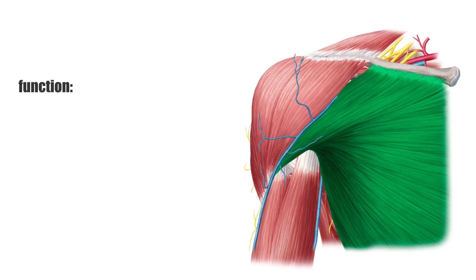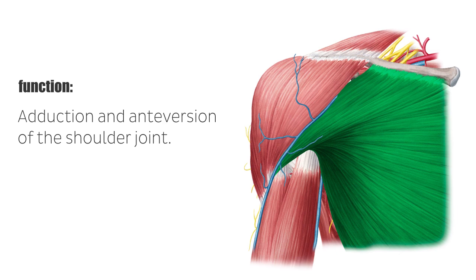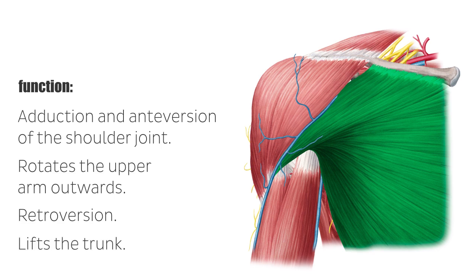The pectoralis major muscle is the most important muscle for the adduction and anteversion of the shoulder joint, which is why it is also known as the breaststroke muscle. It rotates the upper arm outwards and makes a powerful stroke movement, known as retroversion, when the arms are elevated — for example, in wood chopping. If the arms are fixed, the muscle lifts the trunk, which can be helpful in climbing or during inspiration.